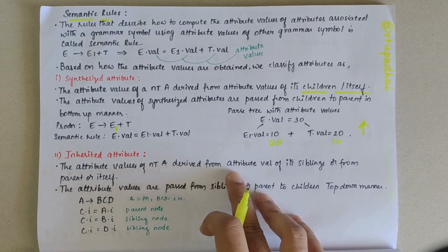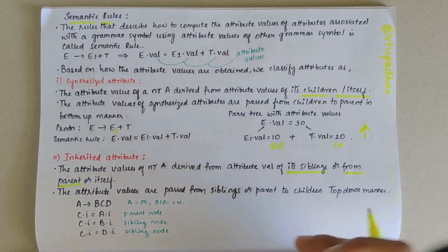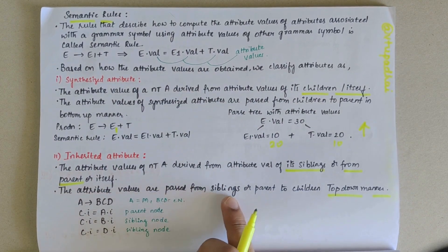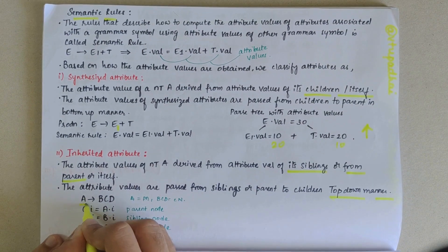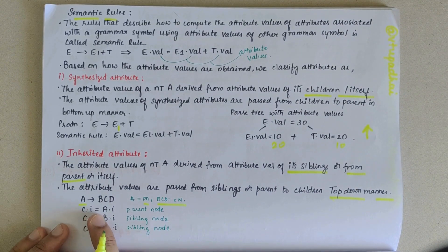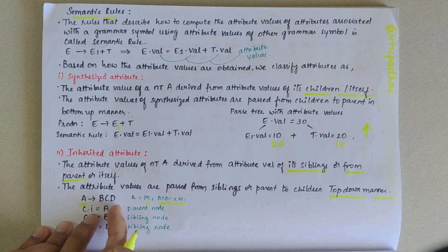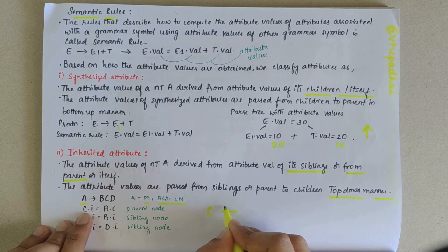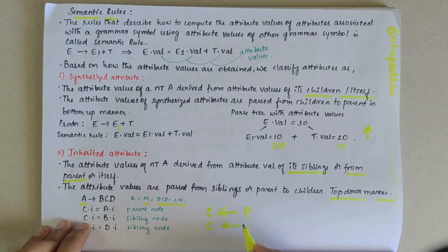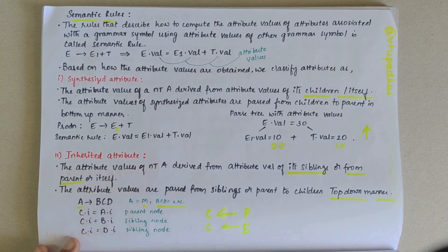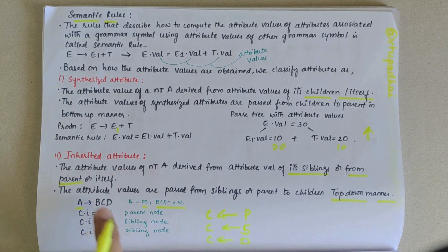Inherited attribute means the attribute values are derived from its siblings or from its parents — that is, in a top-down manner. Attribute values are passed from siblings or parents to the children. For example, consider A → B C D. If we write C.I = A.I, here A is the parent node and C is a child node, so the attribute values of A are being stored in C — from parent to child. Also, if we use B.I for C, B is a sibling node passing its value to C. This is an example of inherited attribute.